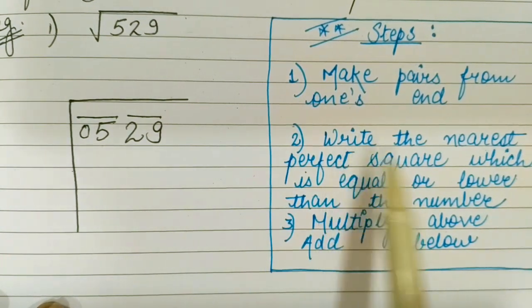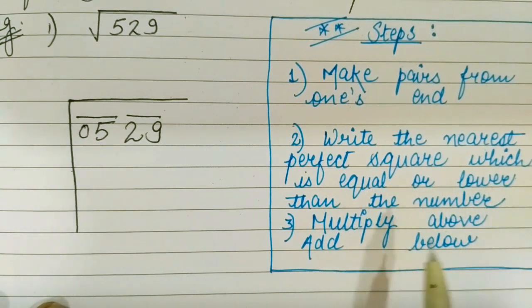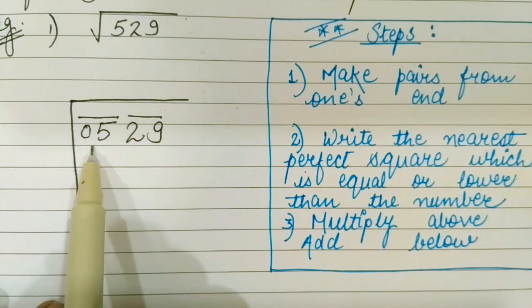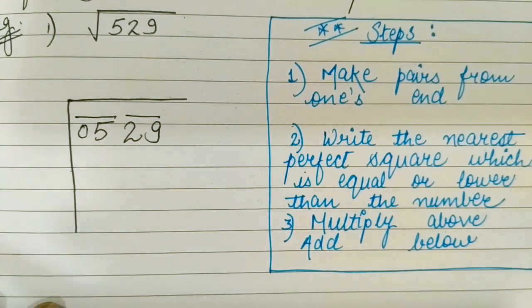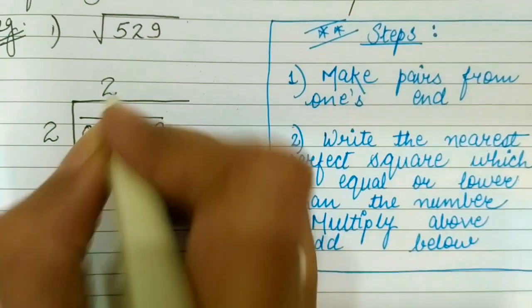Step 2 is write the nearest perfect square which is equal or lower than the number. I have to search for a perfect square which is equal or lower than 5. So that perfect square will be 4. 4 is the square of 2. So I am going to write 2 here and here.